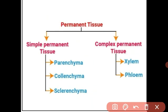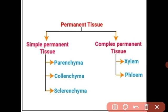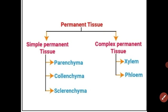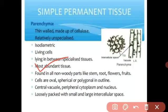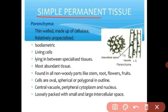There are three subtypes of simple permanent tissue. The first type of simple permanent tissue is parenchyma. Parenchyma is one kind of simple permanent tissue. The parenchyma cell has a thin cell wall made up of cellulose.